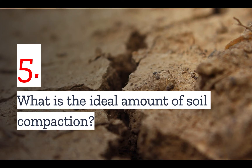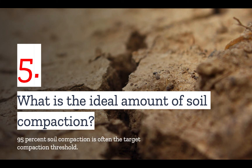Number five: if both over and under compaction are bad, what is the ideal amount? You'll often hear 95% soil compaction as the target compaction threshold to ensure that construction projects are erected on a solid platform. This means the soil has been compacted to 95% of its possible density through compactive efforts. However, in general, the design engineer will determine the compactive threshold required for your project based on an analysis and testing of your land's soil.